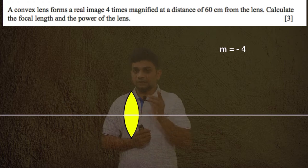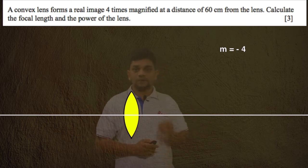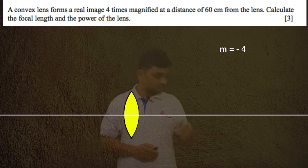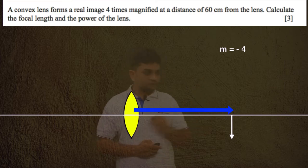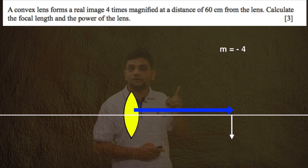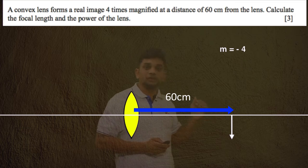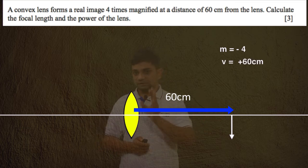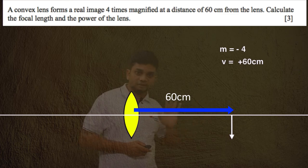Magnification is negative four — the negative sign indicates it is a real image. The real image is always on the right side of the lens. Since the image is on the right side, the image distance v is positive. So v equals positive 60 centimeters, because we are measuring from the optical center towards the right. We need to find focal length. We use the lens formula: 1/v − 1/u = 1/f.